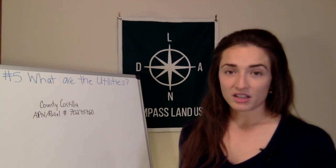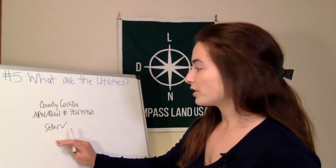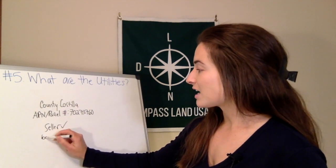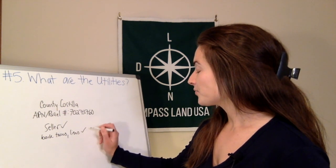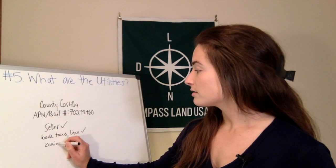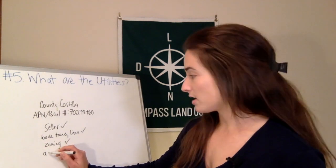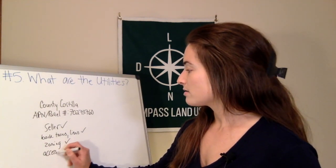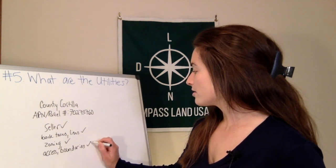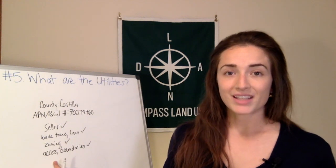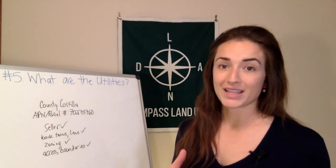At this point in our land buying journey, we know who the seller is, we know if there are any back taxes or liens owed on the property, we know what the zoning is, we know if there's road access, and we know the boundaries of our property. The next thing we need to do is check for any existing utilities and also find out if there aren't any utilities, how much it would cost to bring them in.